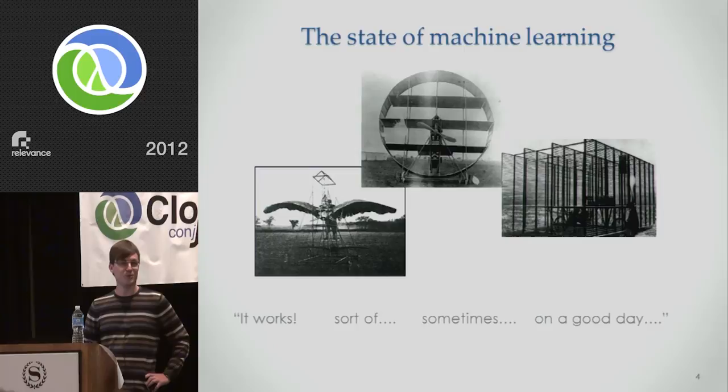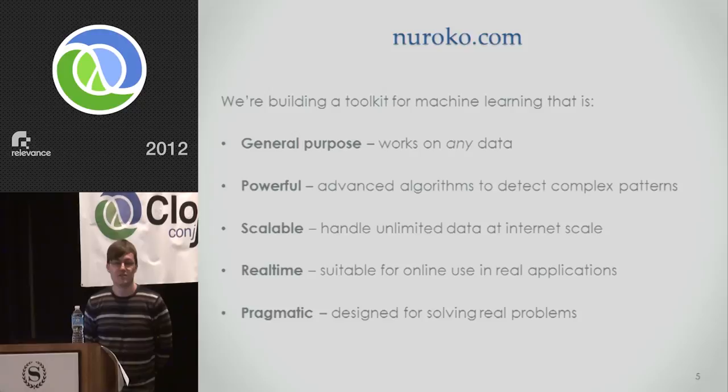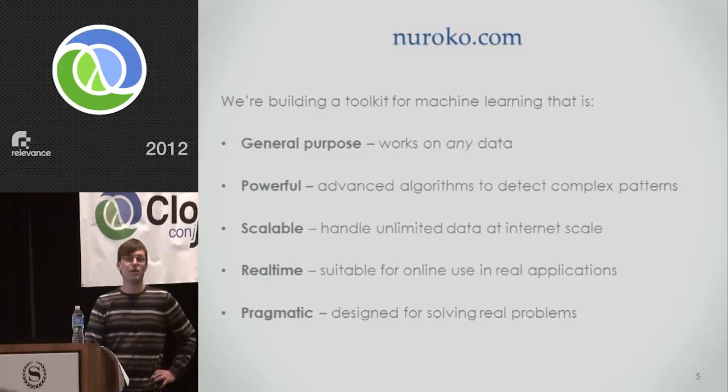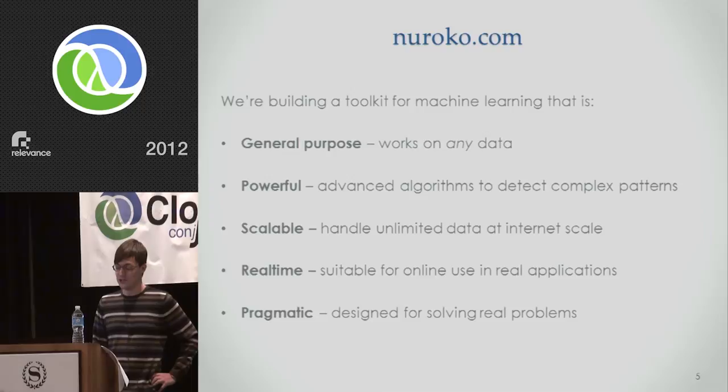Naturally, I thought this was an exciting time and a good time to set up a new start-up in this space. At Newoco, we're building a new approach to machine learning, a new machine learning toolkit. The design is that it's going to be general purpose. It's going to work on any kind of data - images, sound, numbers, text, you name it. The power is in the algorithms, the algorithms that can learn to recognize deep patterns and draw useful inferences from that data. And of course, we're doing all the usual big data stuff, making it scalable, real-time, et cetera. And as I'm here, obviously, we're using Clojure to do this.